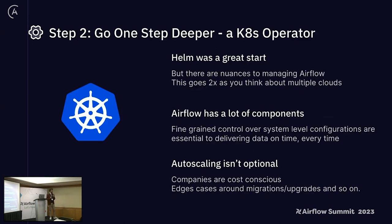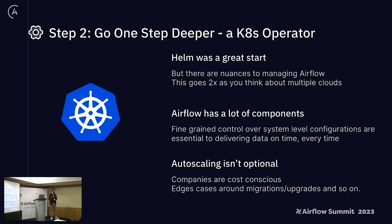We started going deeper and saw demand for Airflow in all three major clouds — which makes sense since each cloud provides its own Airflow service. But as we got deeper into what customers wanted, we found ourselves pretty limited by what Helm could give us, especially when thinking about going across multiple clouds. Kubernetes services across the clouds are a little different, and Helm turned into something that limited us more than it expanded us.